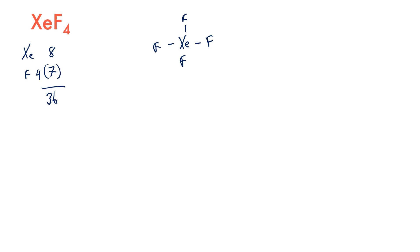36 minus 8 bonding electrons gives us 28. We fill lone pairs on each of the fluorines: 6 times 4 is 24. Subtracting 24 gives 4 electrons remaining, which go on the xenon as 2 lone pairs. This gives us our basic Lewis structure for XeF₄.